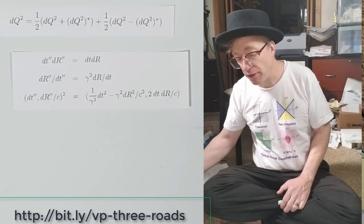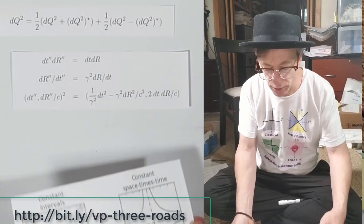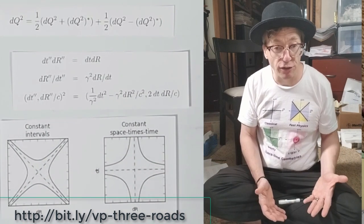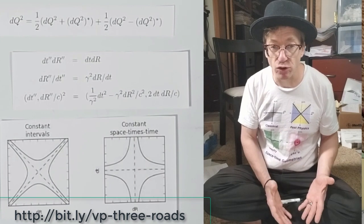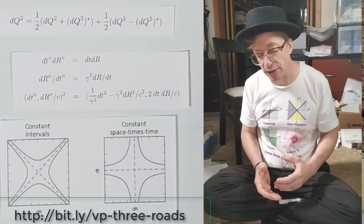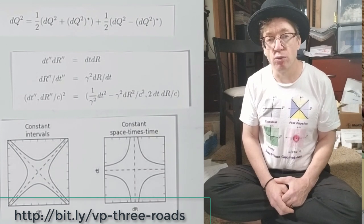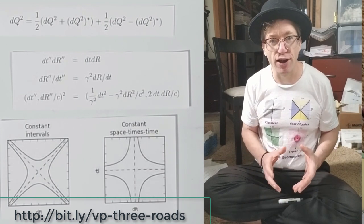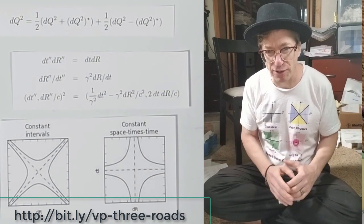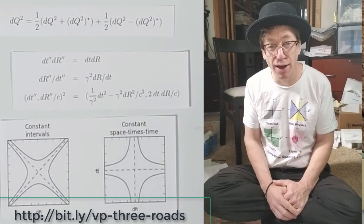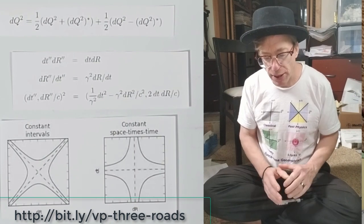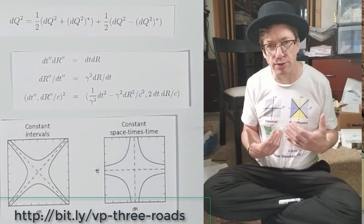I think one of the nicer things that came out of this paper was this little graph here, where I've got constant intervals, that's the stuff of special relativity. And then I've got the graph of constant space times time. And you go, well, those are just kind of like a 45 degree relationship there. That shouldn't be a big deal. That should be easy to figure out.